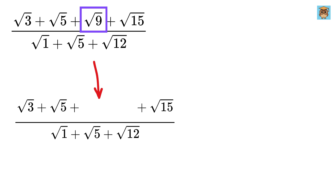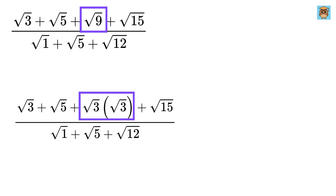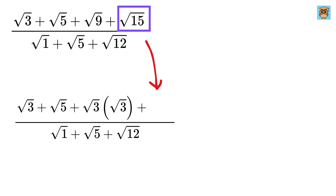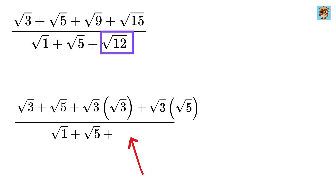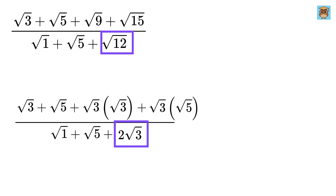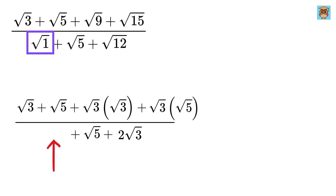First, we rewrite the square root of 9 as the square root of 3 times the square root of 3, and the square root of 15 as the square root of 3 times the square root of 5. Similarly, we can rewrite the square root of 12 in the denominator as the square root of 4 times the square root of 3, which simplifies to 2 times the square root of 3. And this square root of 1 will simply be equal to 1.